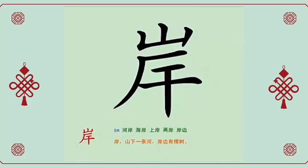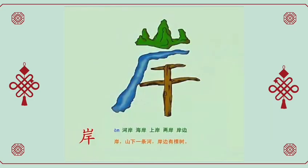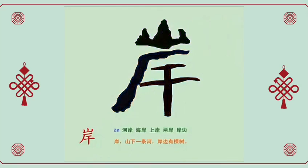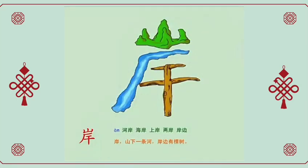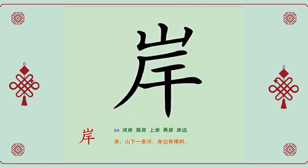岸, bank, shore, coast. There is a river at the foot of the mountain, and there is a tree on the bank. 河岸, riverside. 海岸, sea coast. 两岸, banks of a river.